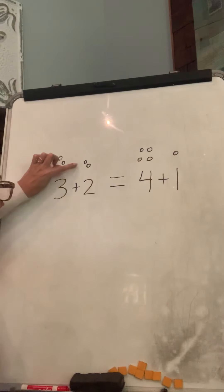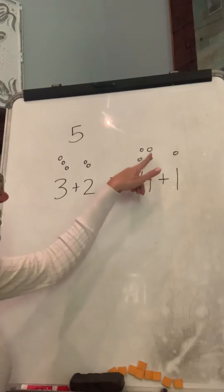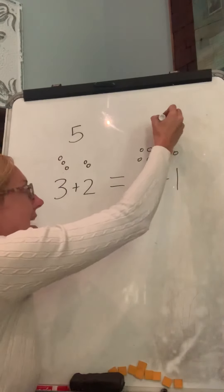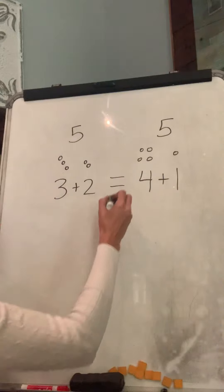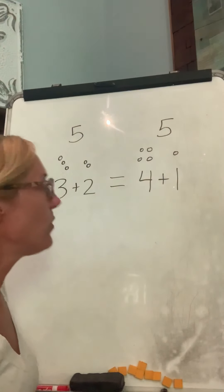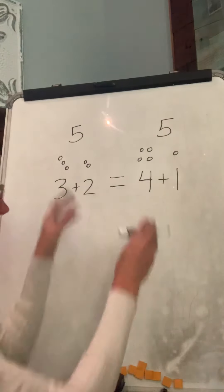One, two, three, four, five. So this side has five. One, two, three, four, five. This side has five. Are those the same? Yeah, they're equal. So we can keep our equal sign here.